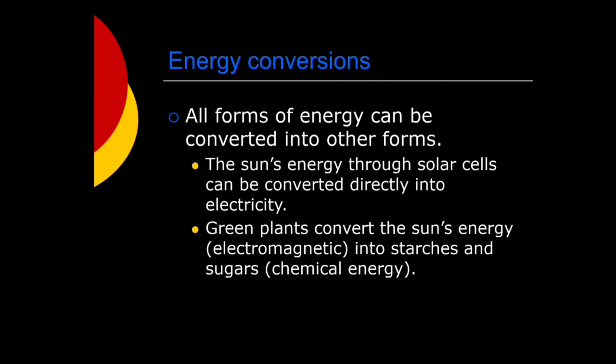The sun's energy through solar cells can be converted directly into electricity. Green plants convert sun's energy into starches and sugars. Here, electromagnetic energy is converted into chemical energy.